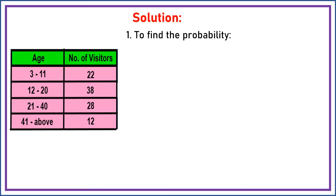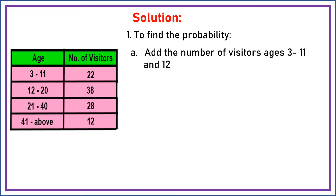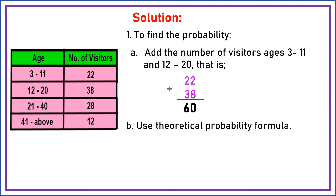First, we're going to find the probability. To find the probability, we have two steps. Add the number of visitors ages 3 to 11 and 12 to 20. That is 22 plus 38. So 22 plus 38 is equal to 60.